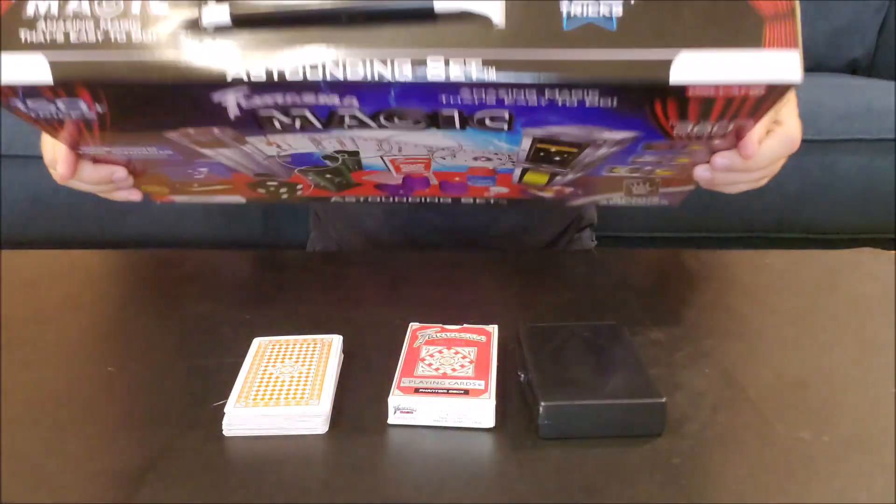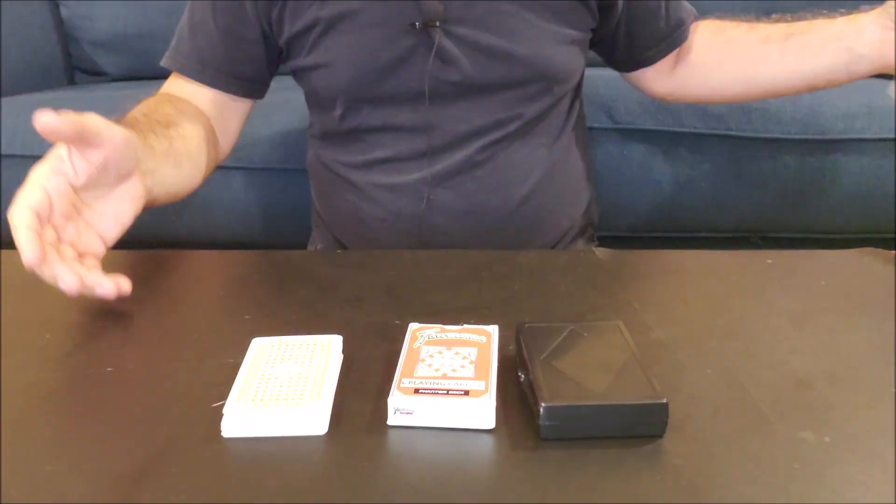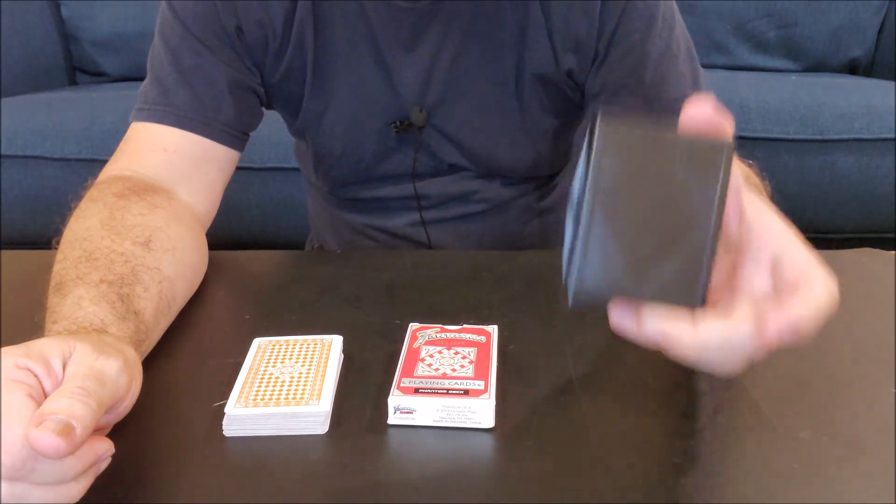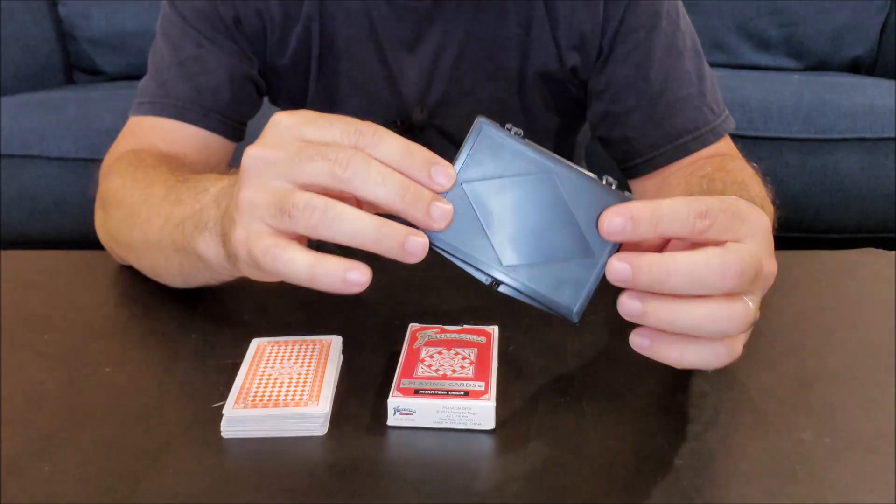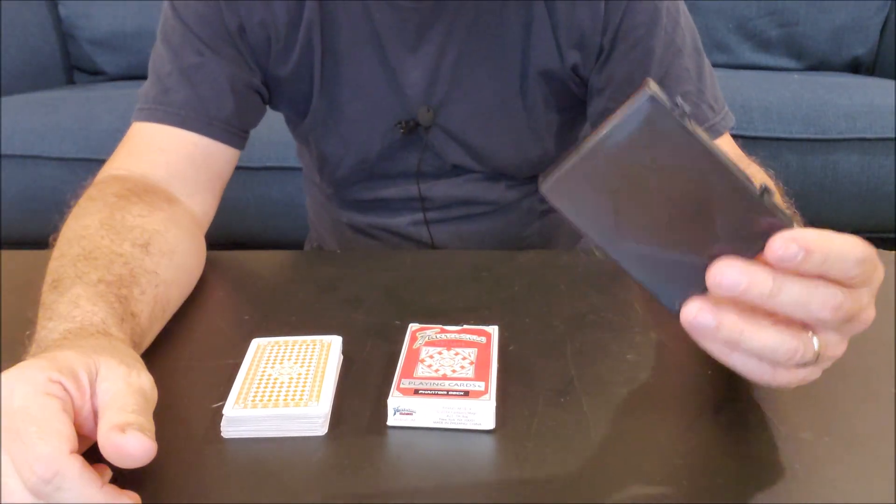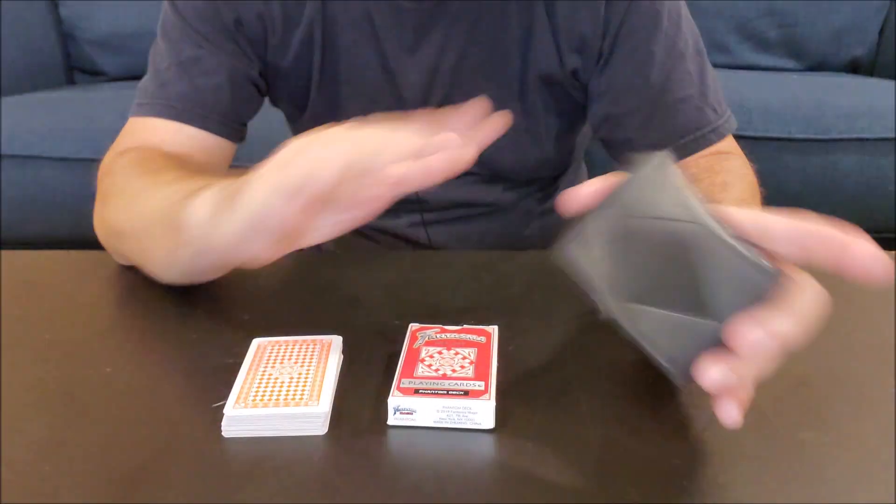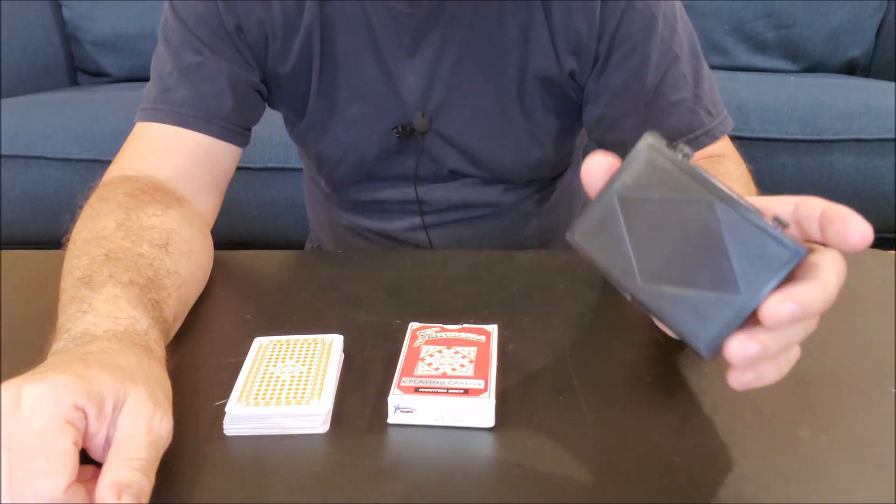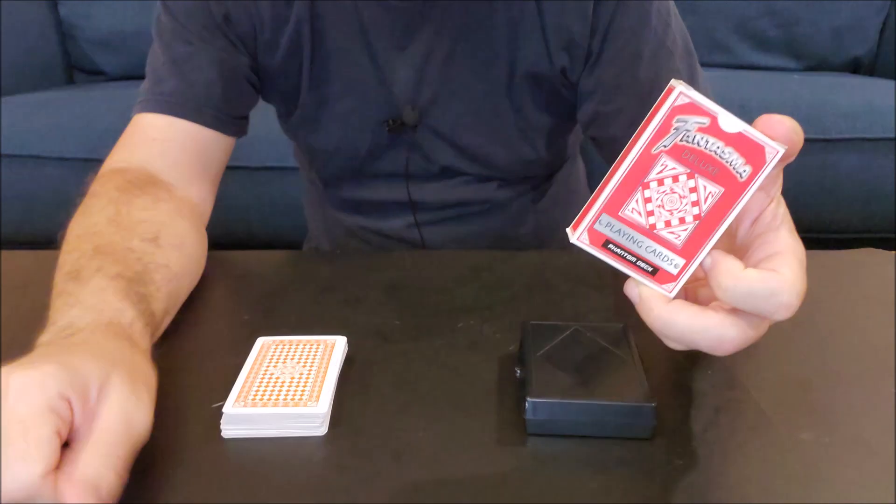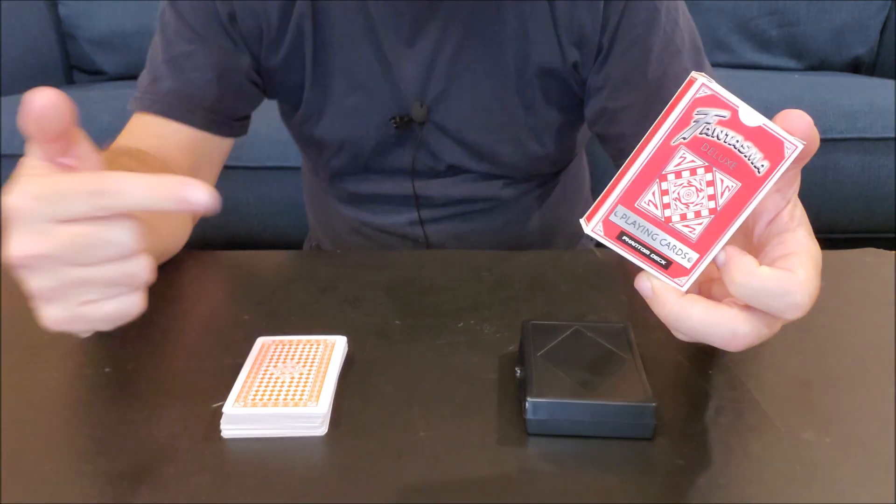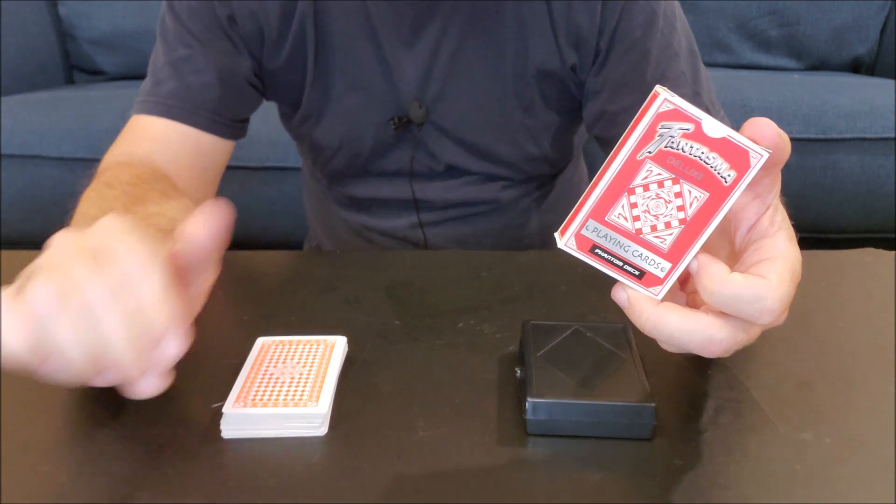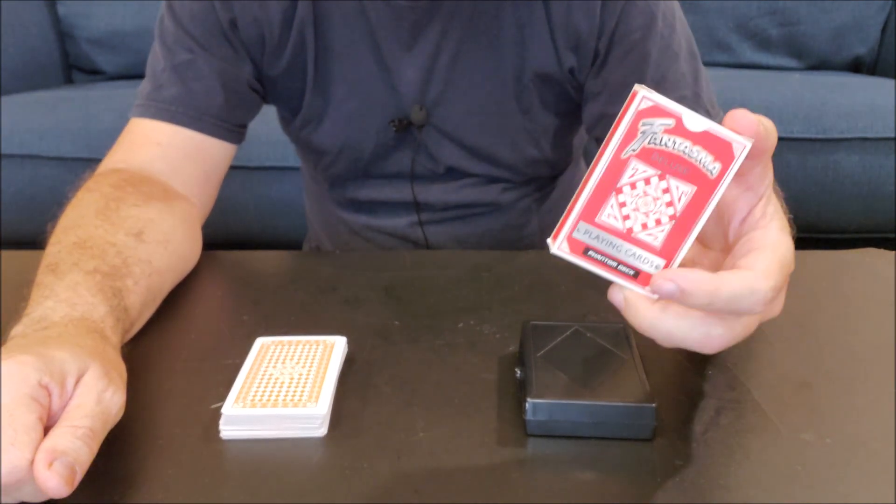Maybe you got the Phantasma magic set for Christmas or for your birthday. Inside that you got the card change box, or you got a card change box in another magic kit. This trick that we'll do today will work with any card change box from any magic kit. We're also going to use the Phantasma deck that we got and it's going to be in the order so that wherever you cut the cards, it's always going to cut to the five of hearts.